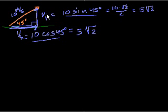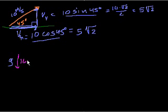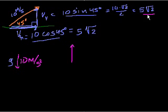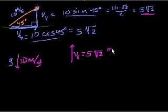This is the really interesting part. If we want to figure out how long the ball stays in the air, the only thing keeping it from staying up forever is gravity, and gravity only works in the vertical direction, always pulling downward at 10 meters per second squared. So this ball is going to stay in the air just as long as a ball thrown straight up with the same vertical velocity — 5√2 meters per second.